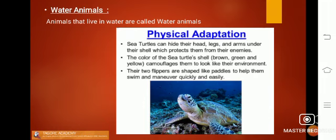Water animals are those animals that live in water, like sea turtle. Sea turtle can hide their head, legs and arms under the shell to protect itself. The color of the sea turtle camouflages to merge in the environment and save itself. It has two flippers shaped like paddles that help in swimming.